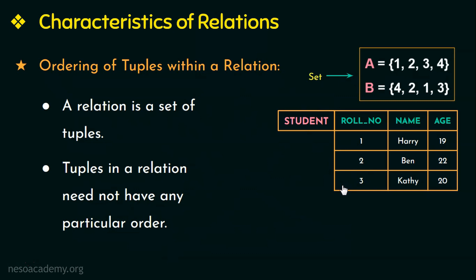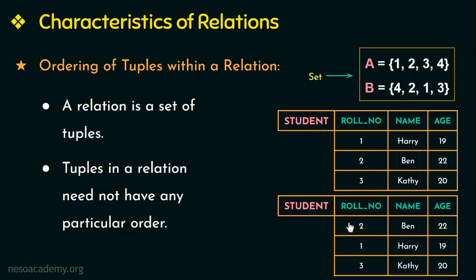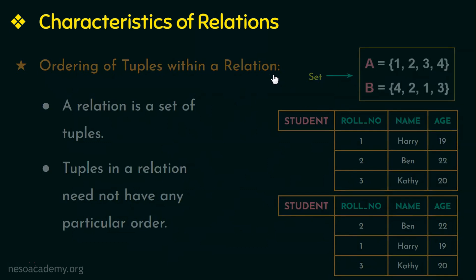For example, in this same relation, if I interchange the first two rows, the meaning of the relation will remain the same. So it is not necessary for the tuples to be ordered within a relation — that is, ordering of tuples within a relation is not necessary or important.